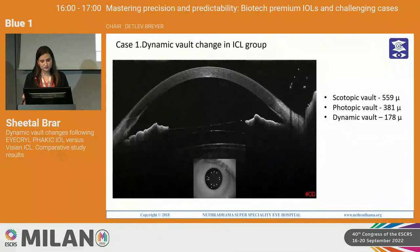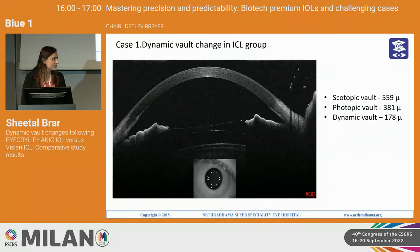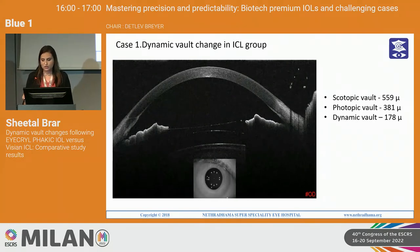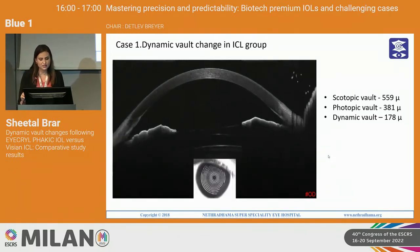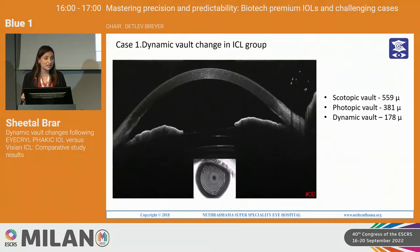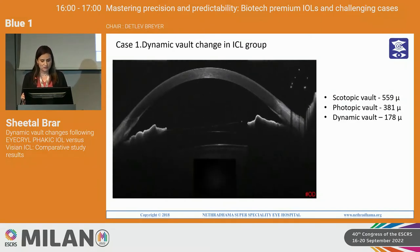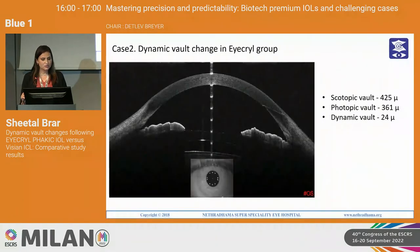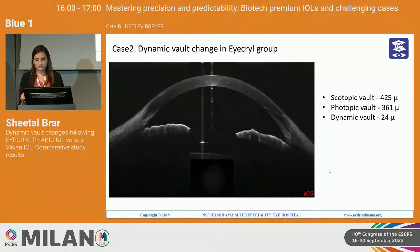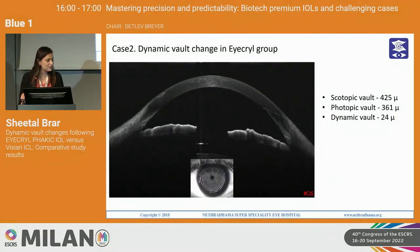We were also not sure whether this difference was only because of the implant material or also due to crystalline lens forward movement, so we had to evaluate whether lens movement was similar in both groups. In one ICL group case — please play the video — the scotopic vault was 559, photopic vault was 381, and dynamic vault change was 178 microns, almost 180 microns. In an iCryl group case, the dynamic vault change was hardly 24 microns. You can visually see there is not much change with the iCryl lens.